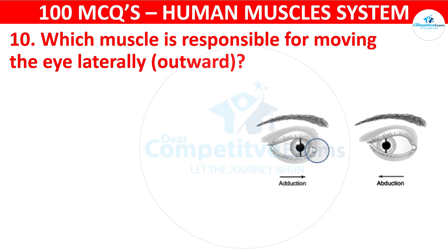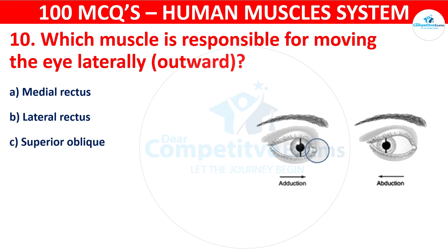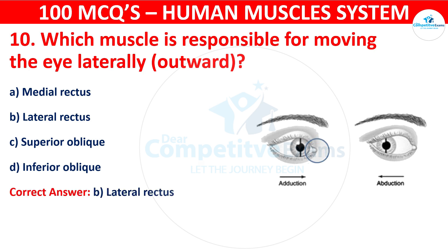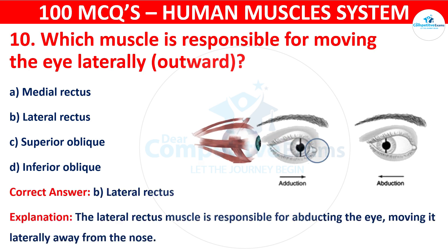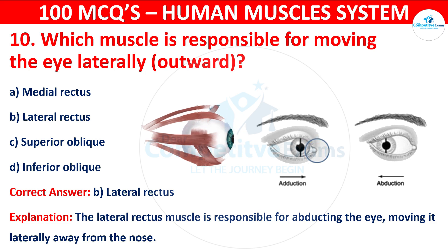Question number ten: Which muscle is responsible for moving the eye laterally outward? Your options are: Medial rectus, Lateral rectus, Superior oblique, or Inferior oblique. The correct answer is B, that is lateral rectus. The lateral rectus muscle is responsible for abducting the eye, moving it laterally away from the nose.